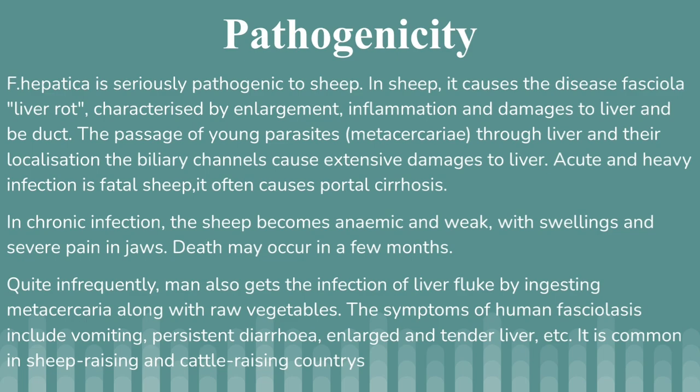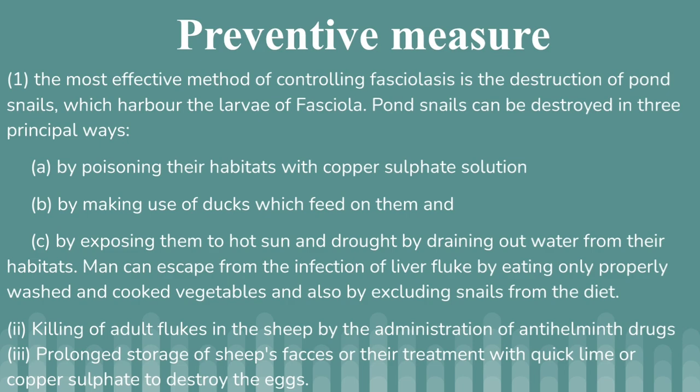Preventive measures: The most effective method of controlling Fasciola is destruction of pond snails, which harbor the larvae of Fasciola. The pond snails can be destroyed in three principal ways: by poisoning their habitat with copper sulfate solution in ponds; by making use of ducks which feed on them; and by exposing them to hot sun and drought or drying out water from their habitat. Men can escape infection by eating only properly washed and cooked vegetables and by excluding snails from water sources. Killing adult flukes in sheep by administering anthelmintic drugs is also recommended. Prolonged storage of sheep feces, or treatment with quicklime or copper sulfate, destroys the eggs.